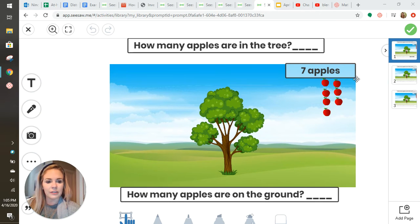If you count over here, you'll see the seven apples. What I want you to do is divide the apples, putting some in the tree and some on the ground.